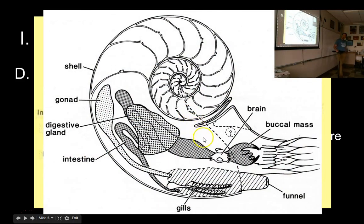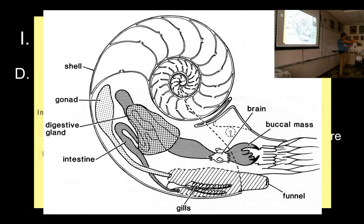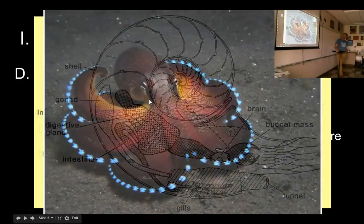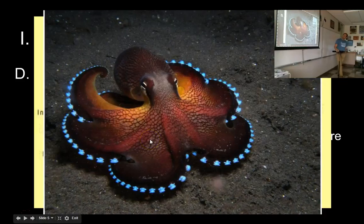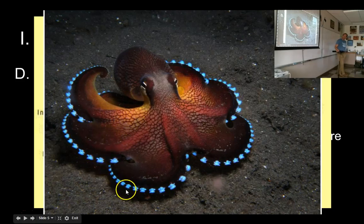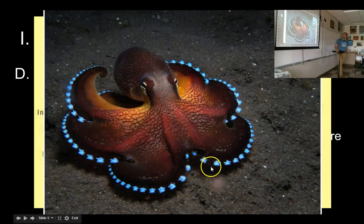A nautilus looks like an octopus and a snail had a baby — you've got the muscular foot with all the tentacles and the beak in the middle, but the body is in a coiling shell. A snail shell has torsion and goes out to the side, but the nautilus shell is bilaterally symmetrical, coiled right on top. Here is a deep-sea octopus species that bioluminesces — it can light up its arms to attract little fish, and then eats them.